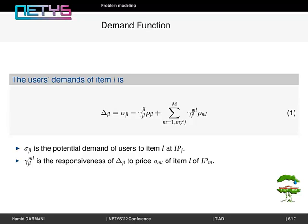Demand function. The users' demands for item l given by equation 1 are affected by one market parameter price rho, where sigma_gl is the potential demand of users to item l at infrastructure provider g.